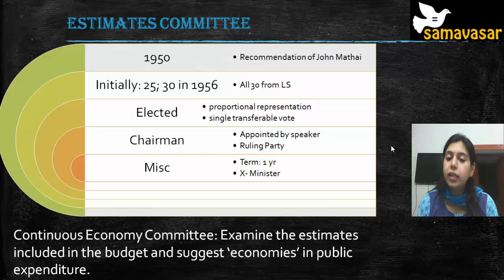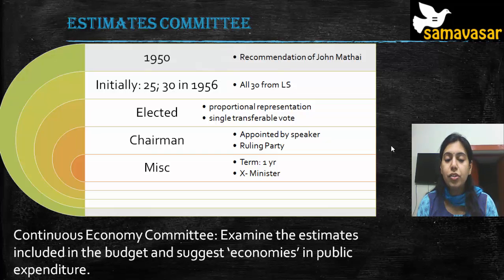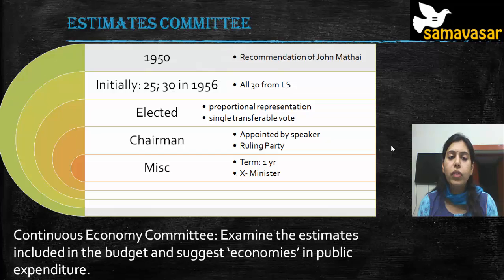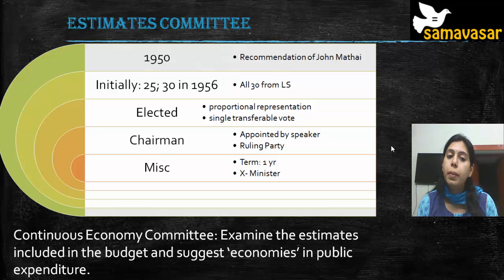The chairman of the Estimates Committee is appointed by the Speaker — not elected. By convention, the chairman always belongs to the ruling party. The term of the committee is one year, and a minister cannot be part of the Estimates Committee.